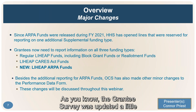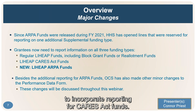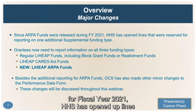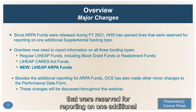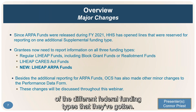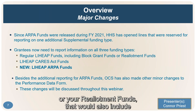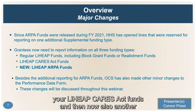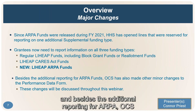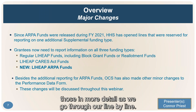The Grantee Survey was updated last year in fiscal year 2020 to incorporate reporting for CARES Act funds. This year, with the introduction of ARPA funds for fiscal year 2021, HHS has opened up lines reserved for reporting on one additional supplemental funding type. Grantees now need to report information on all three different federal funding types: regular LIHEAP funds from your usual annual block grant or reallotment funds, LIHEAP CARES Act funds, and LIHEAP ARPA funds. OCS has also made some other minor changes to the performance data form, which we'll cover in more detail as we go through line by line.